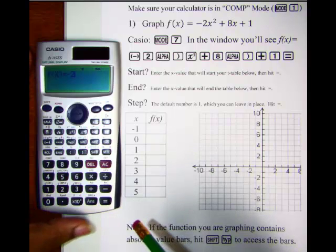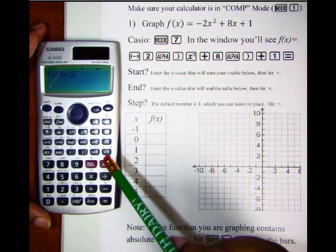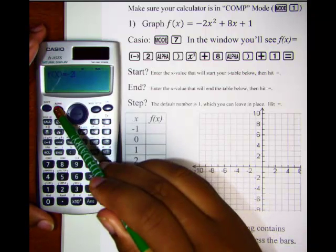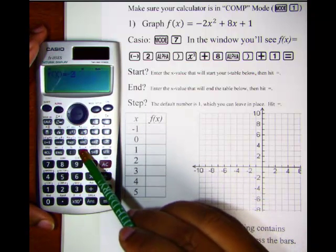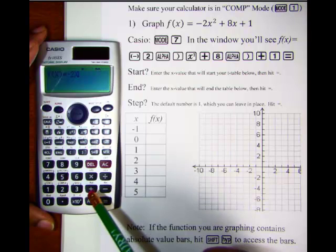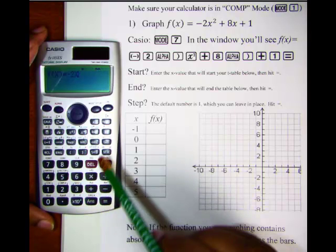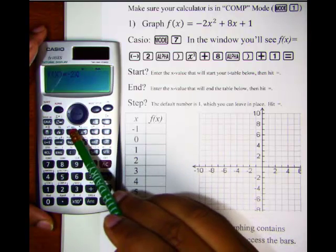Now to access the variable x on the Casio, we're going to hit alpha and then the right parenthesis key. That puts in our x and we want it raised to the second power so we'll hit our x squared key located here.